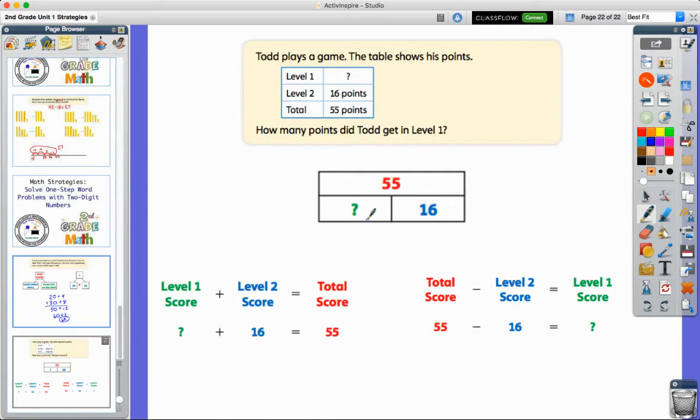And so in this lesson, they try to start to take those part, part, whole ideas and turn that into an equation. And so I showed it to you in more of an expanded form, but here we have it broken apart in an equation. And so we put together the two levels of score. So we have level one, which we don't know. We have level two, which we know. We know that has to equal the total number or the whole, or because we're missing one of the parts, sometimes we would think about this as a subtraction problem. So 55 minus the 16 would give us the piece that's missing.